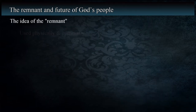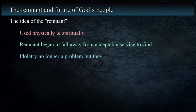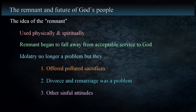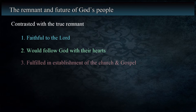The idea of the remnant is used both physically and spiritually. The physical groups that returned began to digress from faithful service to God. Idolatry was no longer a problem for them, but they neglected the service God expected from them. Malachi addressed their polluted sacrifices, divorce and remarriage, and other attitudes the people had adopted. In contrast, there is a spiritual description of the true remnant that would be faithful to the Lord and follow him with their hearts. This is fulfilled in the preaching of the gospel in the first century and the establishment of the church.